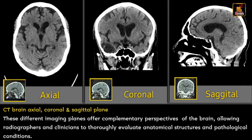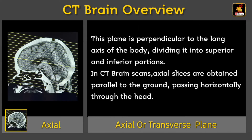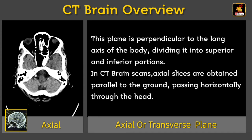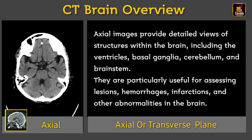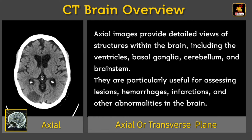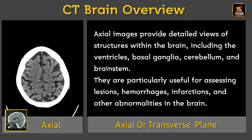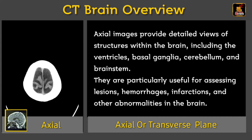CT brain axial, coronal, and sagittal planes — these different imaging planes offer complementary perspectives of the brain, allowing radiographers and clinicians to thoroughly evaluate anatomical structures and pathological conditions. The axial or transverse plane is perpendicular to the long axis of the body, dividing it into superior and inferior portions. In CT brain scans, axial slices are obtained parallel to the ground, passing horizontally through the head, providing detailed views of structures including the ventricles, basal ganglia, cerebellum, and brainstem.